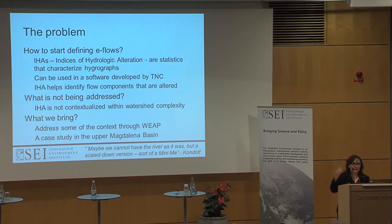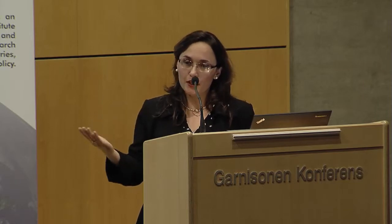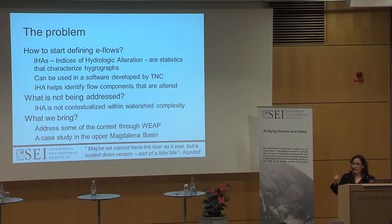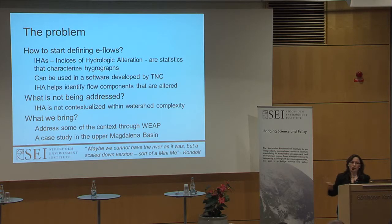So the problem is: how do we start defining e-flows? IHAs — Indices of Hydrologic Alteration — are one way to do that. They are about 60 to 70 different statistics that characterize the complexity of those flows and help characterize hydrographs. They have been mostly promoted by TNC, the Nature Conservancy, in a software package. The IHAs help identify flow components that have been altered by hydropower dams. However, what is not really being addressed with IHAs is the contextualized problem within the context of the watershed.